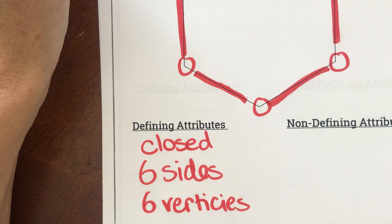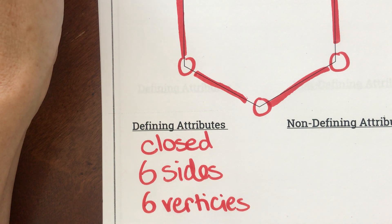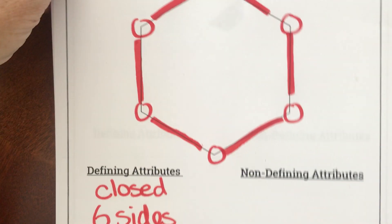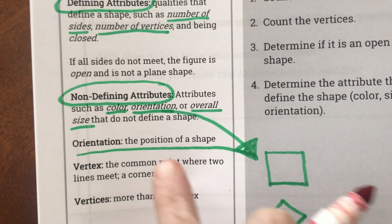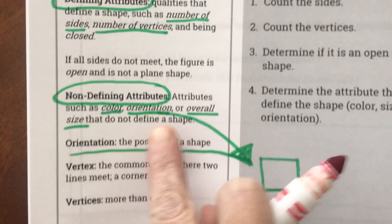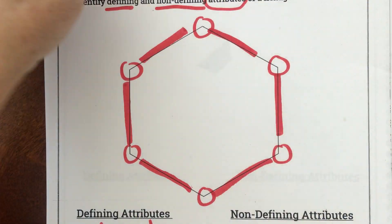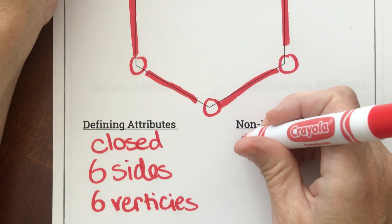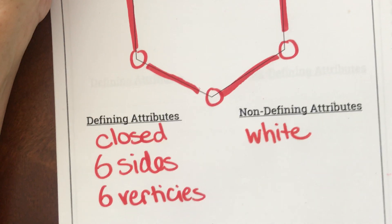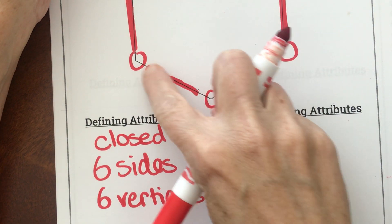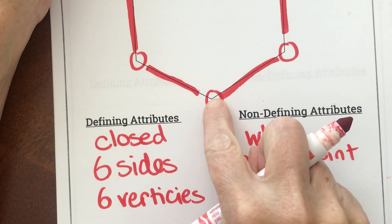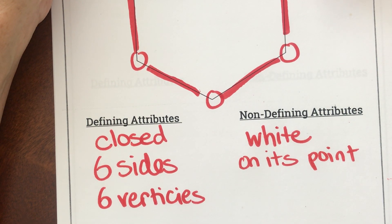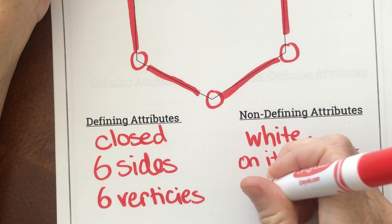If I told someone those things without showing them the shape, that would help them define it — a closed shape with six sides and six vertices. Now for non-defining attributes — things that don't define it — we have color, orientation, and overall size. For this shape, we could say it's white — that doesn't help us know the shape. For orientation, it's on its point. And for size, we could say it's big. But none of these attributes help us figure out the name of the shape.